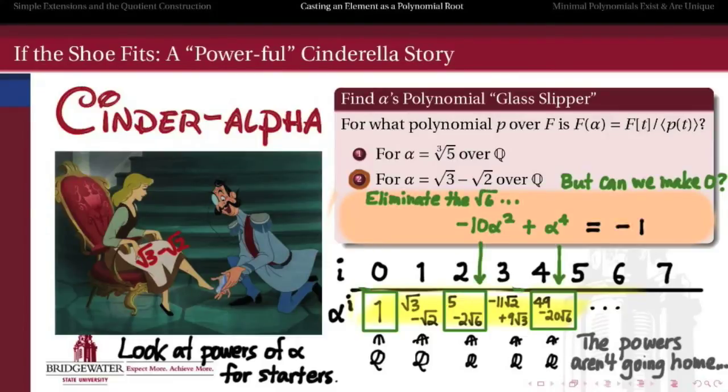If I want to get rid of those radical 6s, one way to do it is to take negative 10 of that second power and add it to 1 of the fourth power. So that I get 20 radical 6s coming from alpha squared and negative 20 radical 6s coming from alpha to the fourth. And you can check that when you add those together, negative 10 alpha squared plus alpha to the fourth cancels out the radical 6s and gives us negative 1. So if I want to find a combination of my powers of alpha that makes 0, all I have to do now is add 1, the 0th power, to both sides.